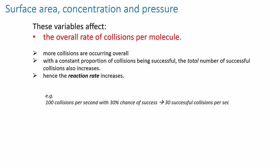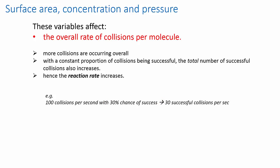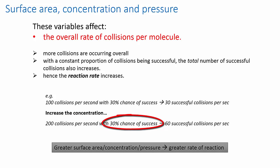To give you a really simple numerical example, imagine a situation in which molecules were undergoing 100 collisions per second with a 30% chance of being successful. That would mean that on average you would have 30 successful collisions per second. Now, if you increase the concentration, so that there are 200 collisions per second, you've still got a 30% chance of being successful, but that gives you on average 60 successful collisions per second. So, we've effectively increased the rate of reaction.